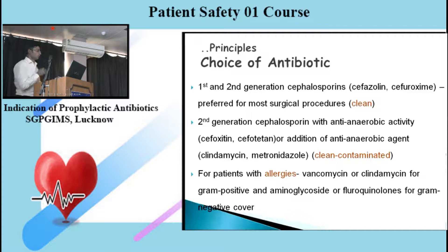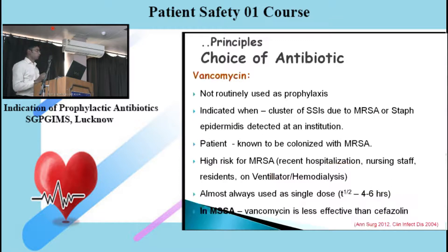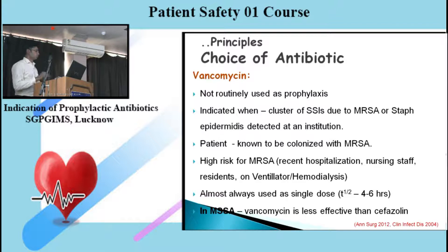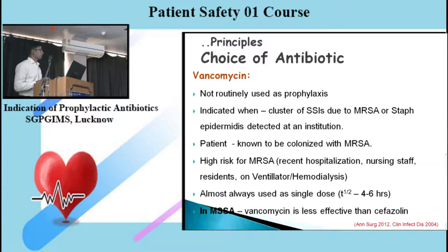Coming to specific antibiotic use — vancomycin is used in cases of beta-lactam sensitivity or in patients with MRSA-proven infestation. It is not routinely indicated as a prophylactic agent. The CDC-listed indications include a cluster of surgical site infections due to MRSA or Staph epidermidis detected at an institution, or a patient known to be colonized with MRSA.